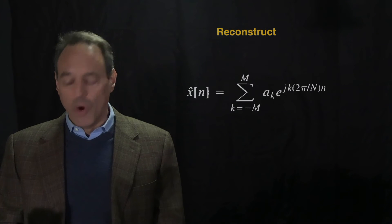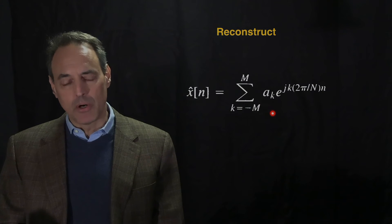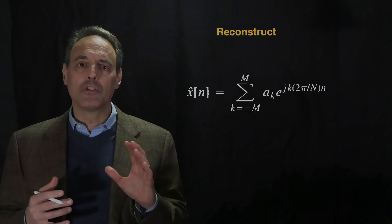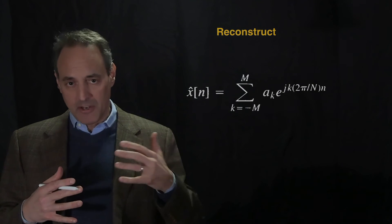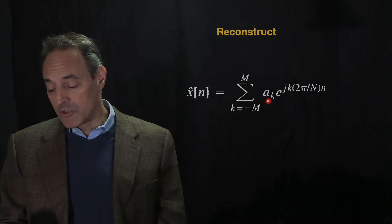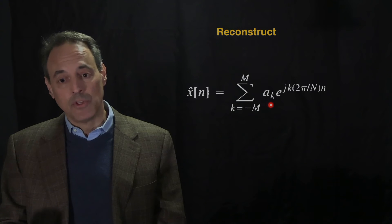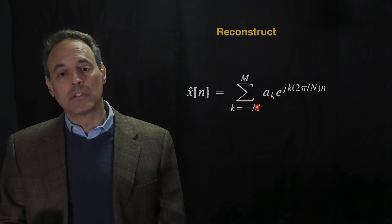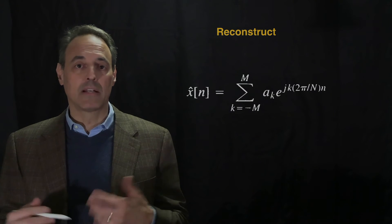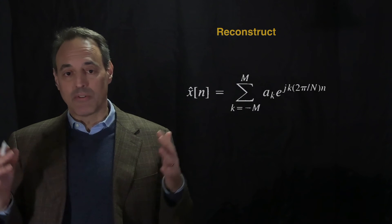Once we have these coefficients, we want to reconstruct the signal from the Fourier modes. The Fourier mode representation runs from negative infinity to infinity, but in practice we limit the sum between −M and M. We'll run a series of experiments: having already computed all a(k), we reconstruct the signal and see what happens as we vary how many terms M we use — one, two, three, and so on.